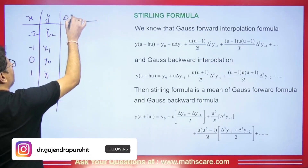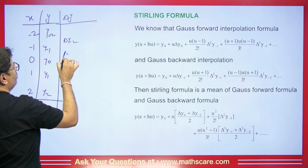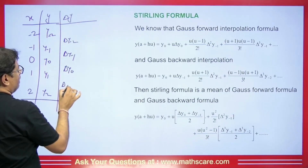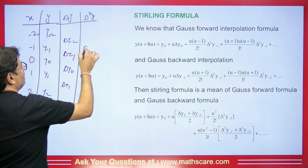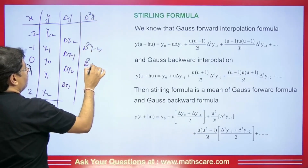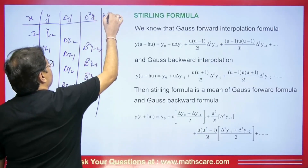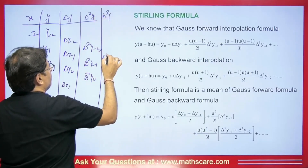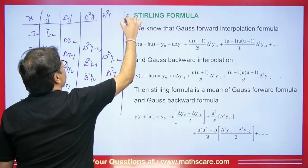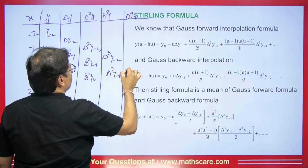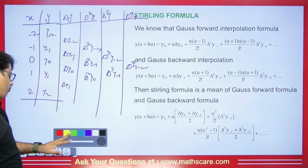Then what we do here is take out Δy. So we have Δy₋₂, Δy₋₁, Δy₀, and Δy₁. Like this we have Δ²y: Δ²y₋₂, Δ²y₋₁, and Δ²y₀. Then we have Δ³y: Δ³y₋₂ and Δ³y₋₁. And like this we get Δ⁴y — Δ⁴y₋₂. So this is the value we have. After that I told you the Gauss forward formula.